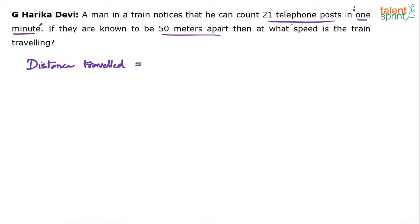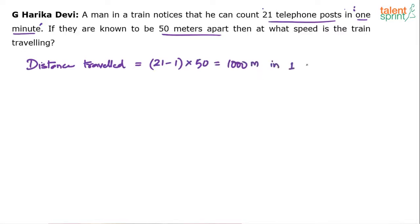How many poles did the man count? 21 posts in one minute. The distance will be 21 minus 1 into 50. So, 21 minus 1 is 20, and 20 into 50 is 1000. Basically, the man has traveled 1000 meters in one minute.